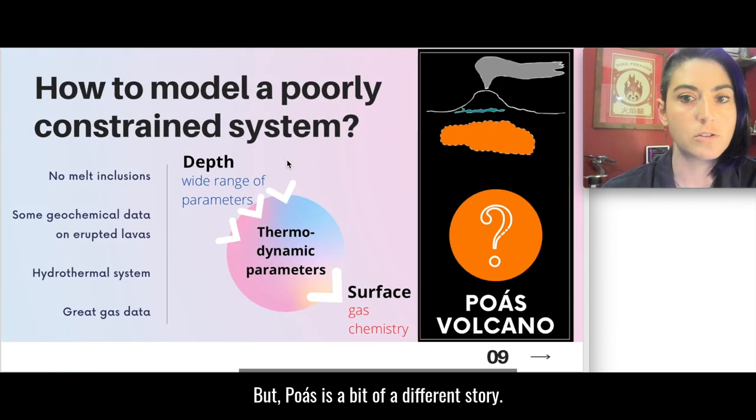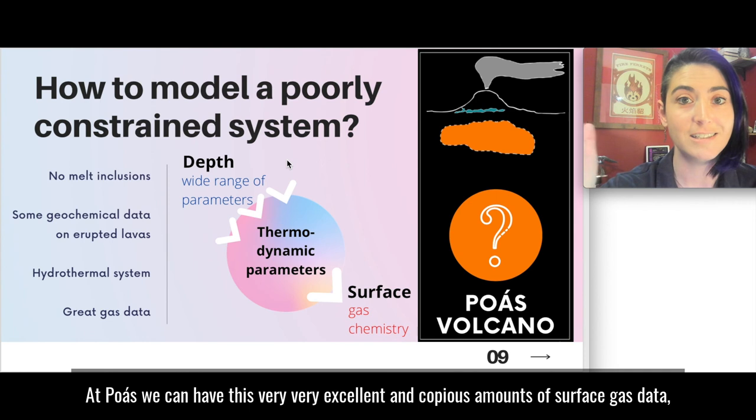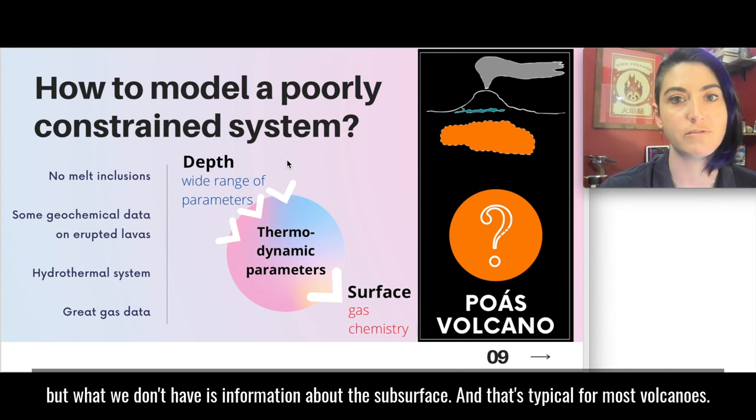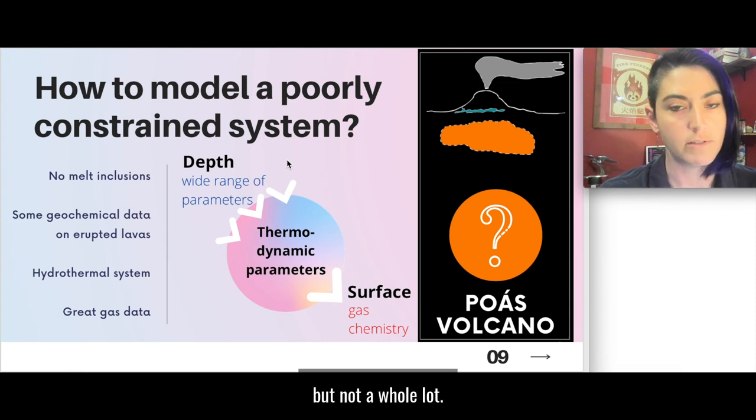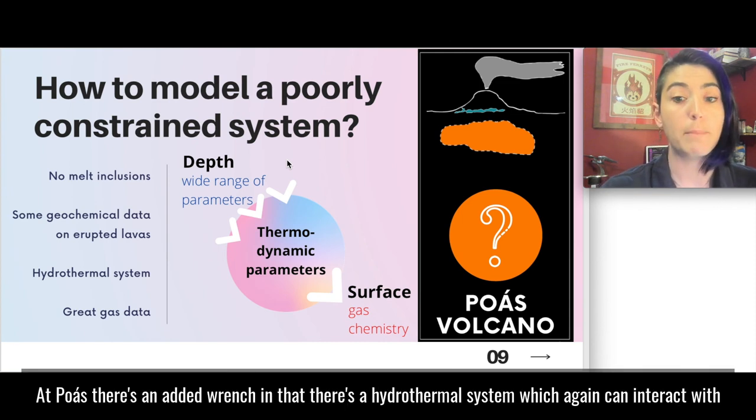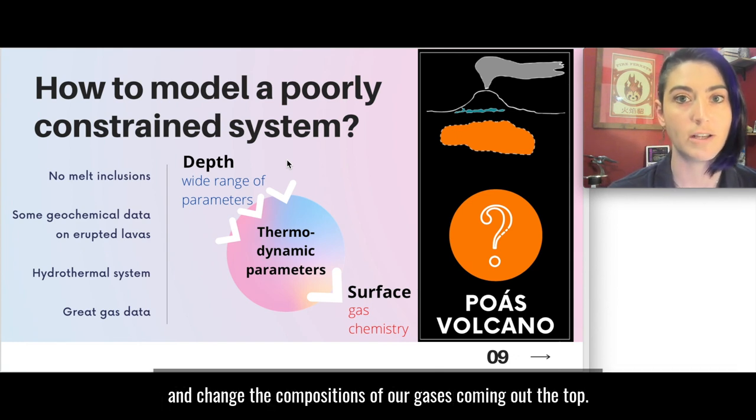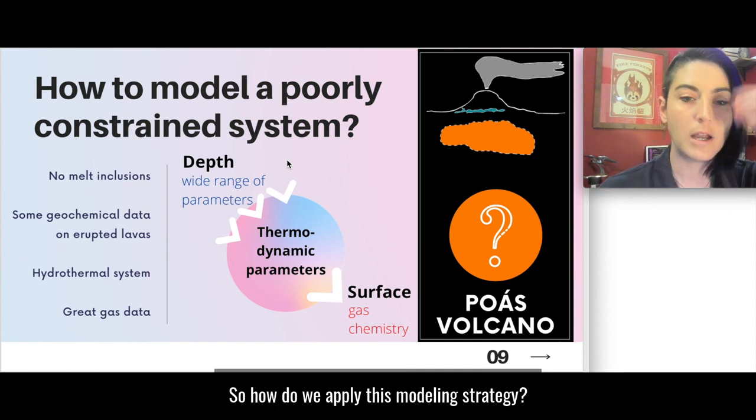But Poas is a bit of a different story. At Poas we again have this very excellent and copious amounts of surface gas data but what we don't have is information about the subsurface. And that's typical for most volcanoes. We don't have melt inclusions. We have some geochemical data on the erupted globules but not a whole lot. At Poas there's an added wrench in that there's a hydrothermal system which again can interact with and change the compositions of our gases coming out the top. So how do we apply this modeling strategy?